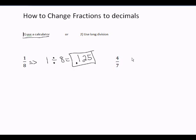Then you can try 4 over 7. It's 4 divided by 7 on your calculator. You should get 0.571428 and it keeps on going.